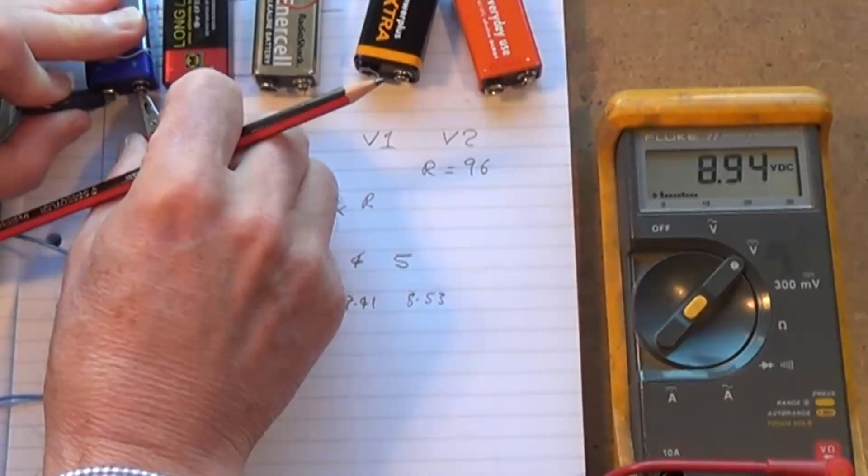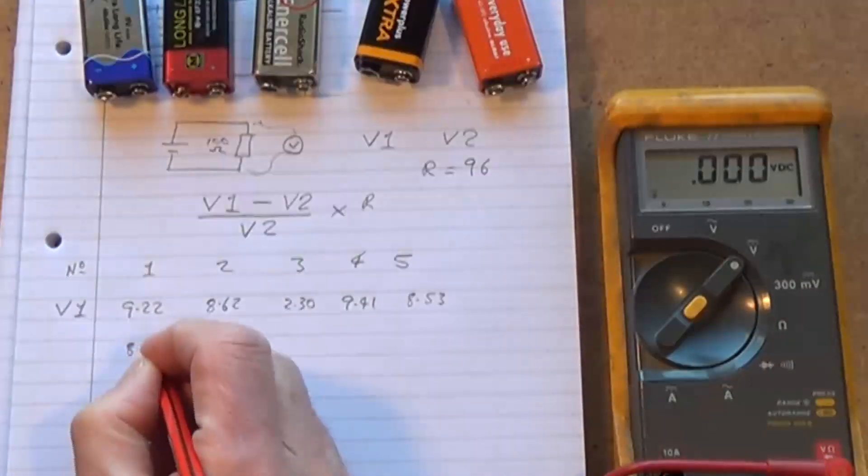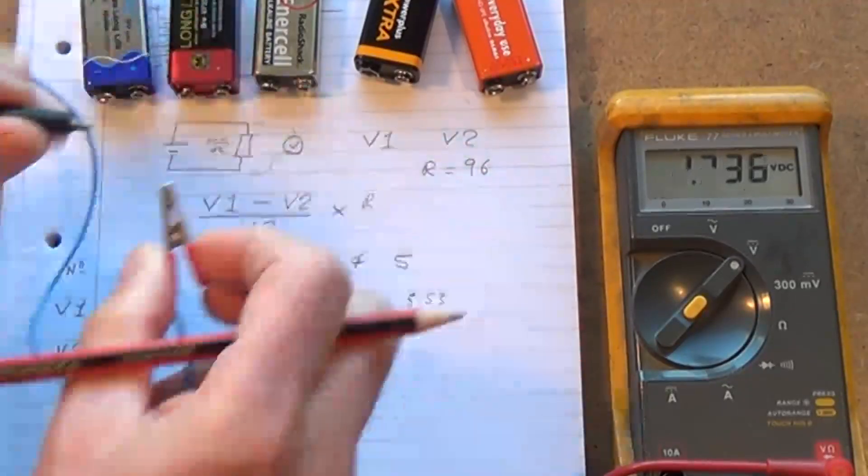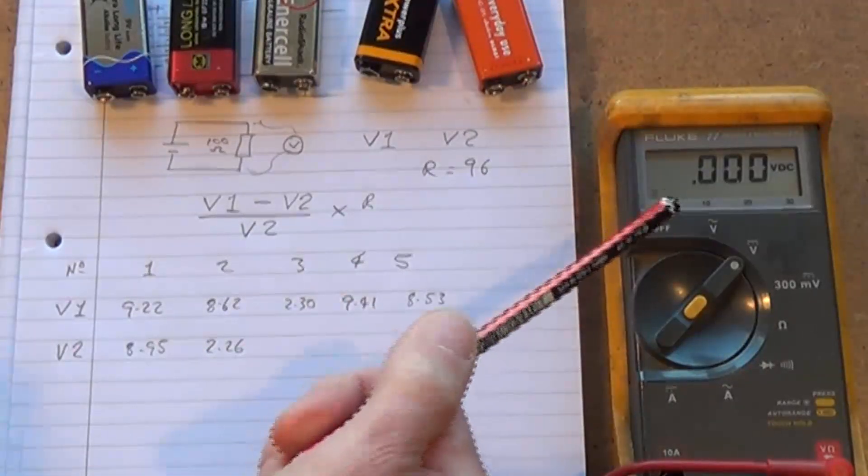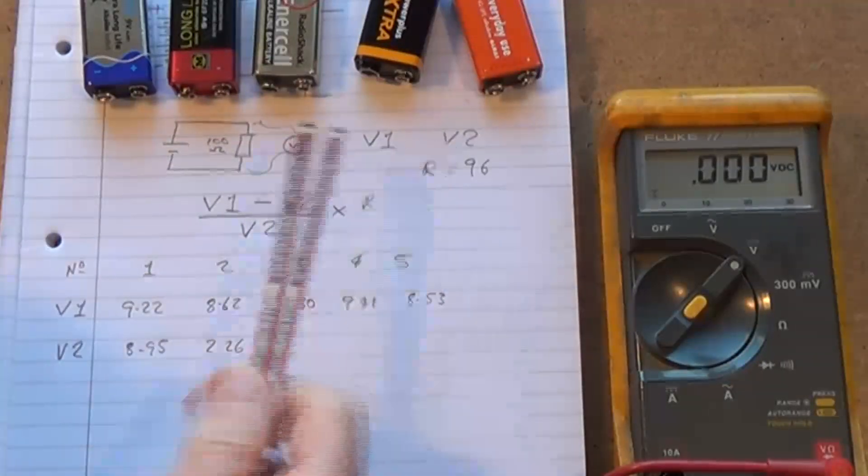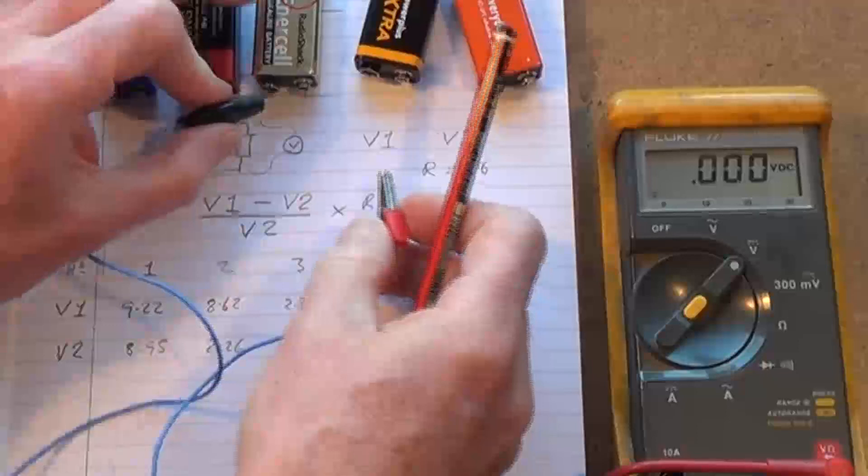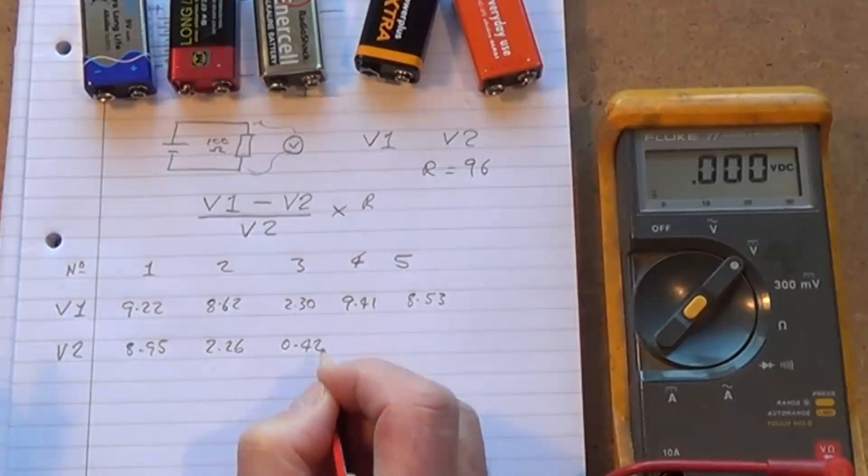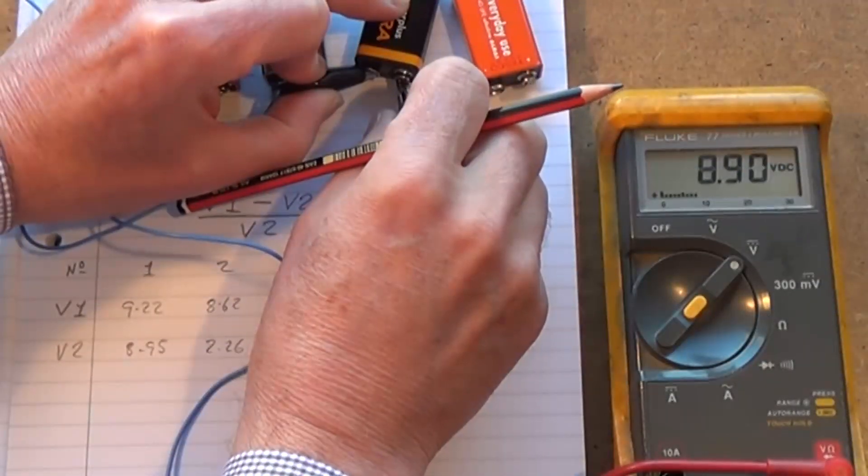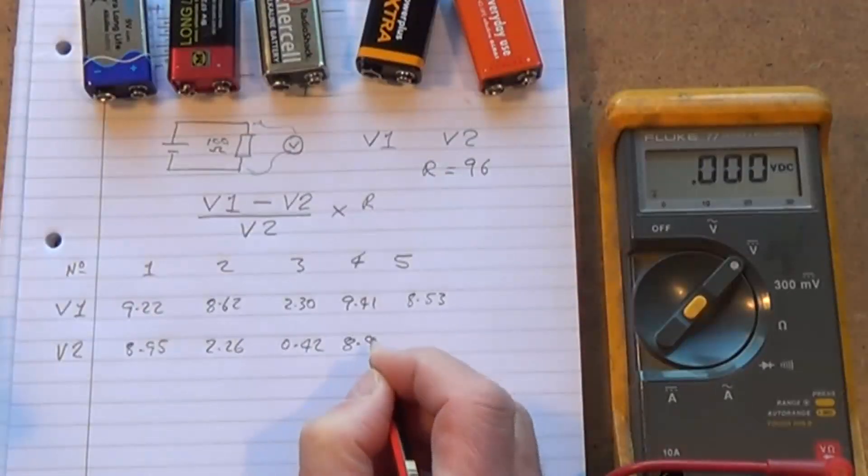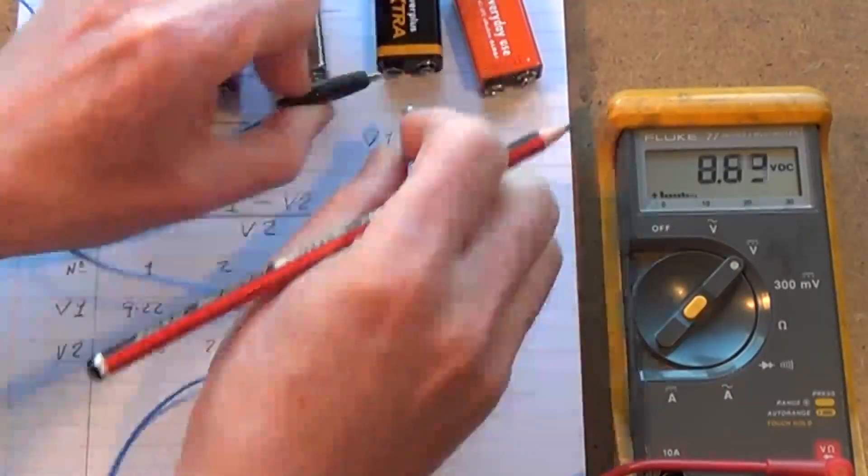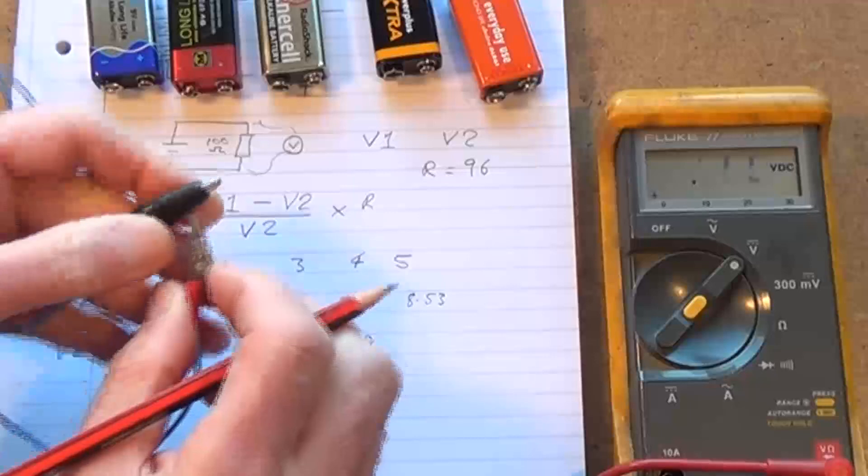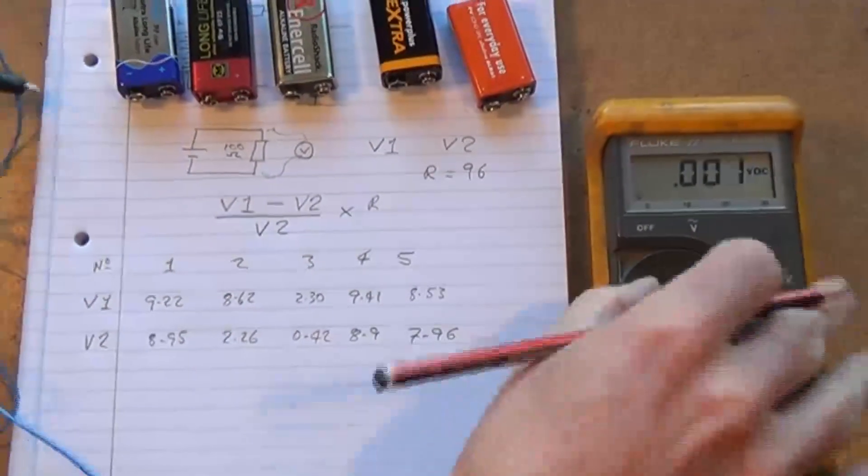So 8.95, 2.26. If you notice the voltage was dropping and that's just the load effect of the resistor, so that's going to be a pretty rough battery. That's 0.42. That's 8.9 looking pretty solid. What is it? We'll call it 8.9 and then this one is 7.96.